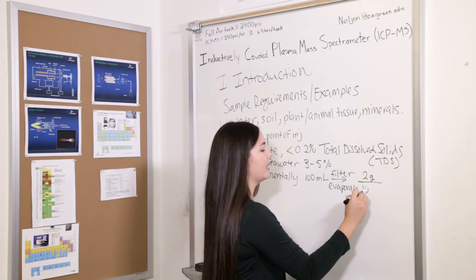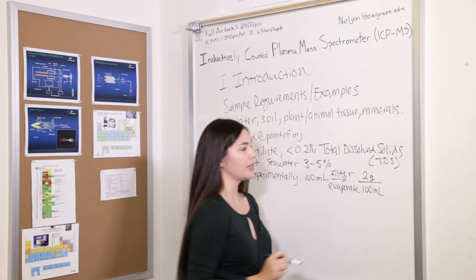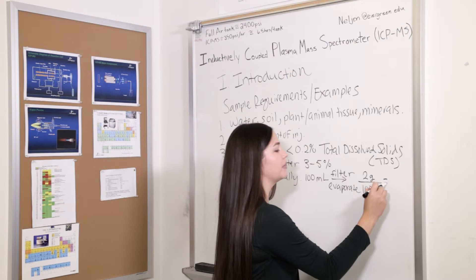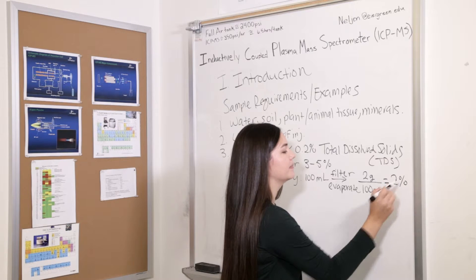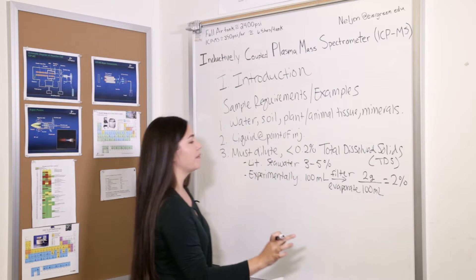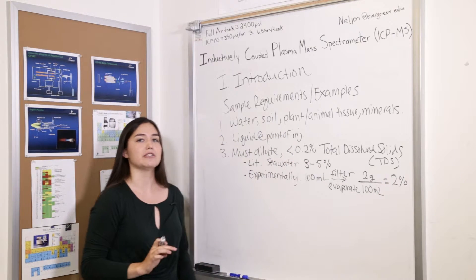And in that 100 ml aliquot of water, your total dissolved solids would be 2%. And so that way experimentally, you would know how to dilute your samples.